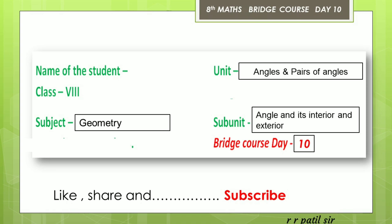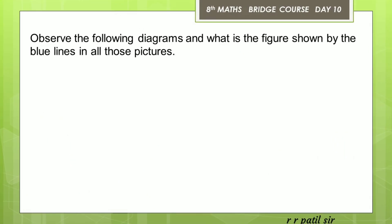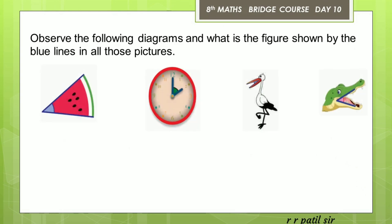Let us observe the following diagrams and identify what is shown by the blue lines in all those pictures. In the diagrams you will see blue lines — in the first diagram, in another diagram the arms are shown as blue lines, and you can also see the crocodile's mouth represented by blue lines. These are all related to our questions.